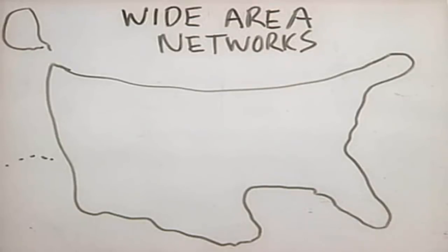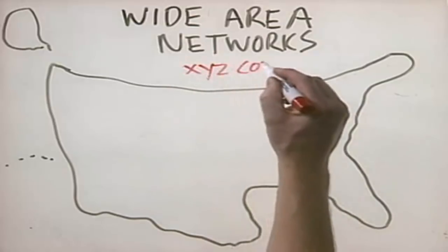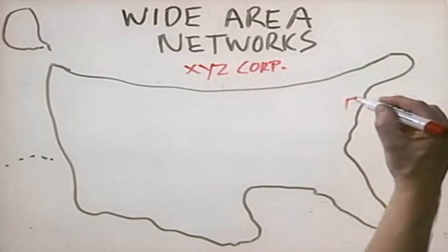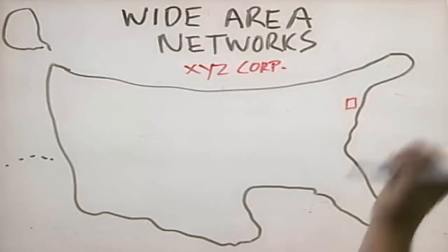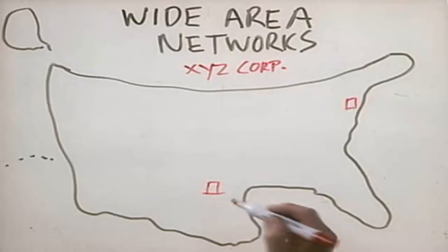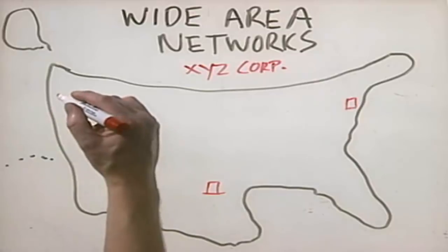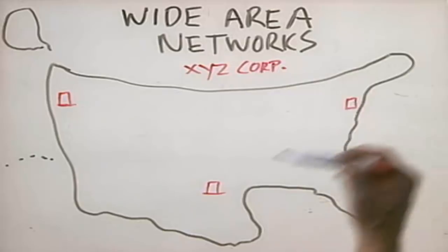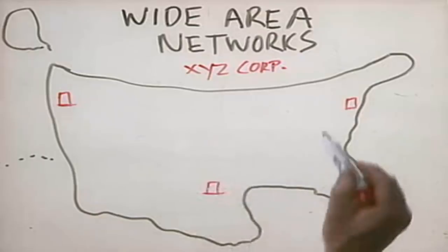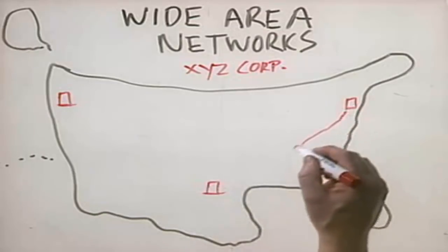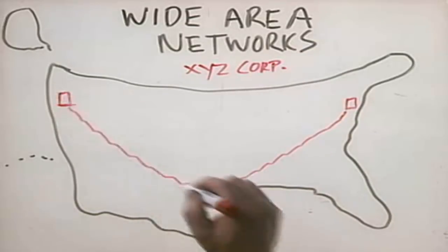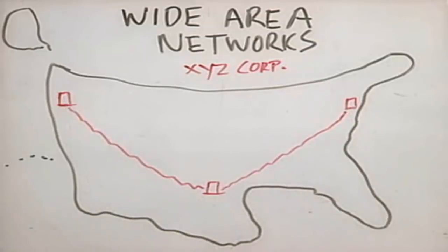It's also possible to have a network where hosts are very widely distributed geographically. When we have that situation, we're talking about a wide area network. Basically, a wide area network is a group of interconnected LANs that are separated geographically. For example, suppose we have a company named XYZ Corp. XYZ has an office in New York City with a local area network, another office in Houston, Texas, and another in Portland, Oregon. These local area networks are inter-networked together, making a very large inter-network, or a wide area network.